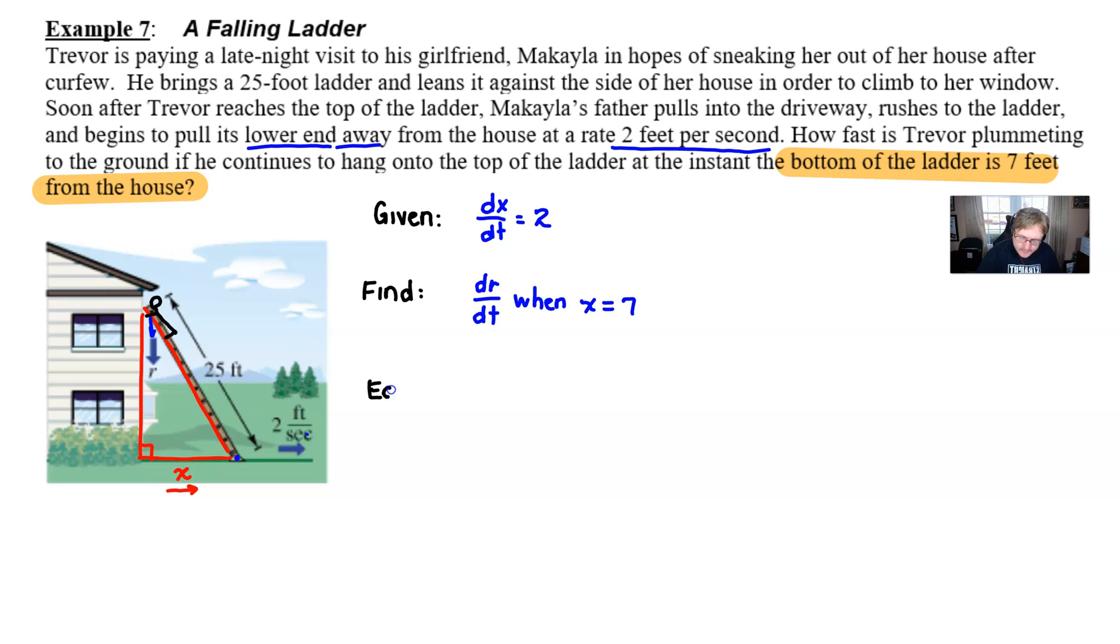Well again you're always looking at being given some rates and I know there's a lot of text in this question but if you look really at the one related or the one rate here it says that we're pulling the lower end away from the house at a rate of two feet per second. So this lower end is going to cause this x distance to become larger so we can say that the dx over dt is a positive two. We're growing so we're positive and that's really the only rate that's provided. You know honestly there's only two other numbers in the problem per se and we're going to be able to fill those in in the appropriate spots. Now if you remember the way I scaffold it I also ask students to tell me what you're trying to find. Typically if you go to the question mark you'll be able to figure that out. How fast is Trevor plummeting to the ground? So Trevor is going to be kind of moving in this direction that's along the r length and so we are going to be finding dr dt and we want to specifically find that dr dt when the bottom of the ladder is seven feet from the house.